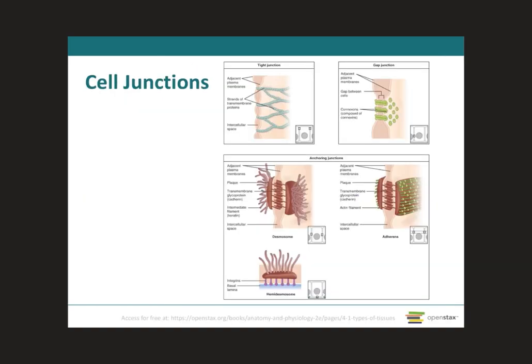Now that we've covered cytoskeleton components — microtubules, microfilaments, and intermediate filaments — and the plasma membrane extensions — cilia, flagellum, and microvilli — it should be easier to understand how cell junctions work to keep cells together. Cell junctions are structures that, for the most part, keep epithelial cells together with little or no space in between, meaning the cells are closely connected and not separated by intracellular material. The three basic types are tight junctions, anchoring junctions, and gap junctions.